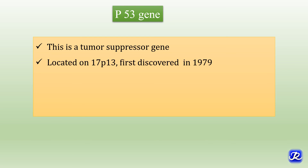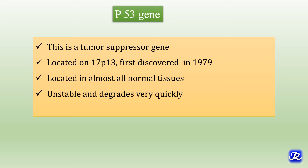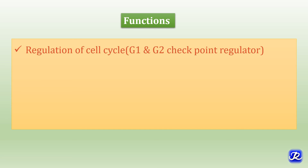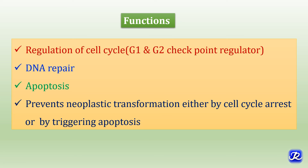The second tumor suppressor gene is p53, located on chromosome 17, first discovered in 1979. It is present in almost all normal tissues but is unstable and degrades very quickly. It is one of the most mutated genes in cancer. Functions of p53 include regulation of the cell cycle at G1 and G2 checkpoints, DNA repair, and apoptosis. It prevents neoplastic transformation either by cell cycle arrest or by triggering apoptosis. Functions of both retinoblastoma and p53 have been discussed in the video on cell cycle regulation, linked in the description box.